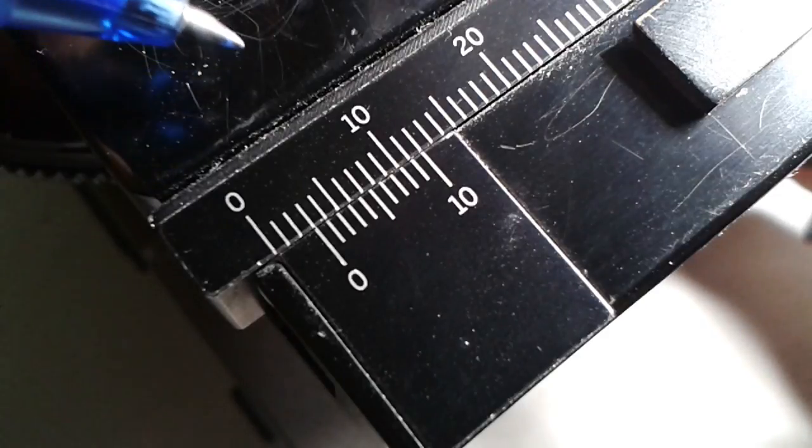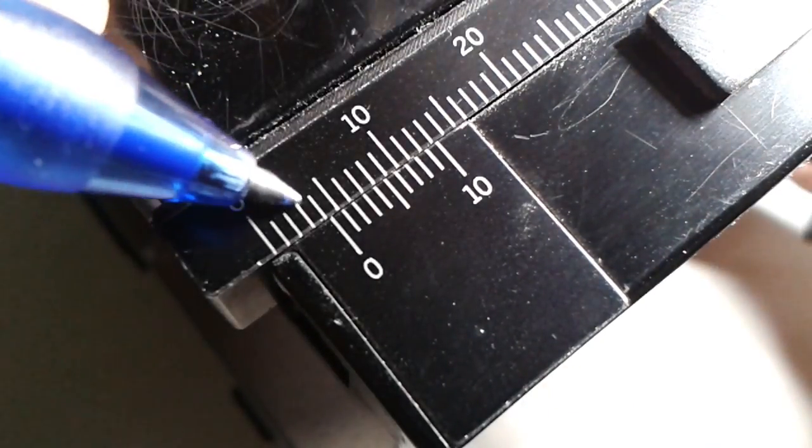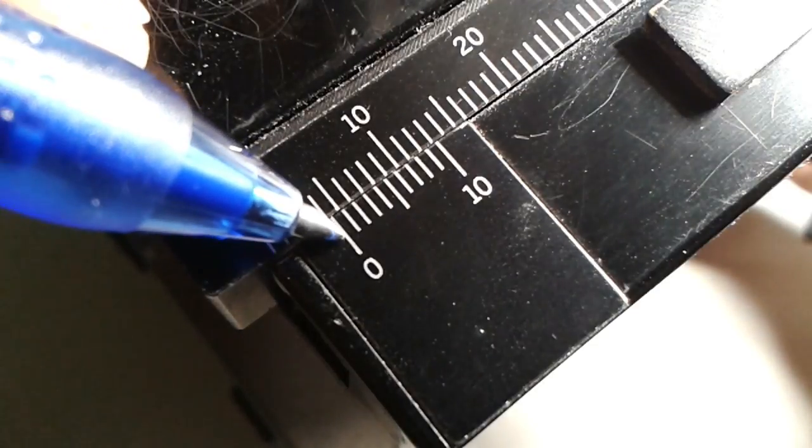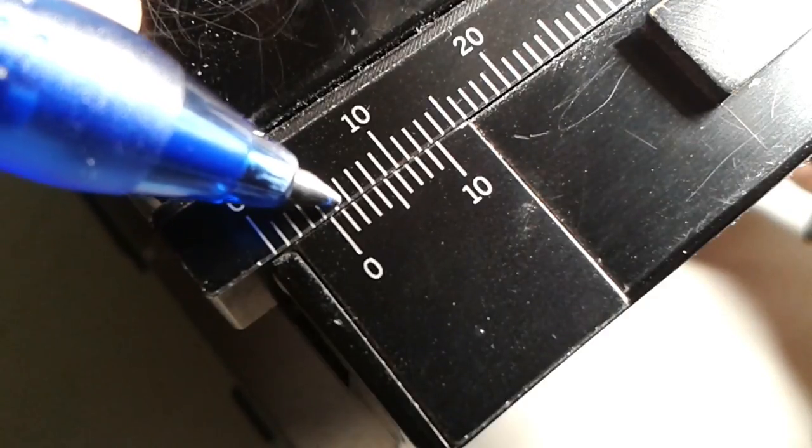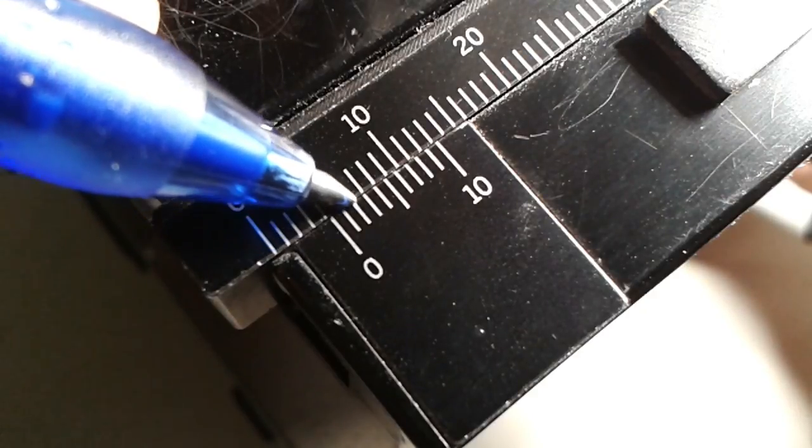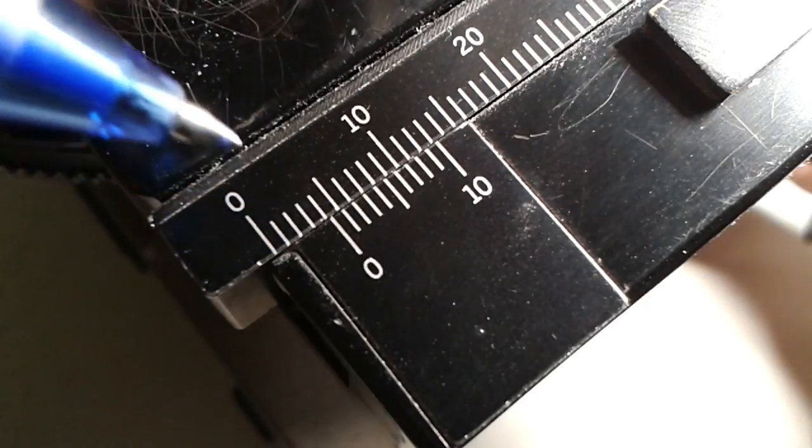So let's try another one here. For example, this is one, two, three, four millimeters and a little bit. What could this be, maybe 4.1, 4.2? Let's look which one is lined up. I think maybe the second one is pretty much lined up or the third one. So this would be 4.2, the 4.2 millimeters.